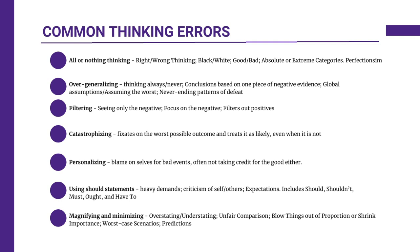Catastrophizing entails anticipating the worst possible outcome without considering the more likely or positive alternatives. An example is imagining that a minor mistake will lead to a total and complete irreversible failure. To challenge this, you would evaluate evidence for and against the feared outcome and consider a more realistic scenario. Personalizing involves taking undue responsibility for external events, attributing them to oneself without sufficient evidence — for example, assuming that a friend's bad mood is a result of something you did, even though there's no direct evidence linking them. Question personalization by considering alternative explanations for events and recognizing the limits of personal influence.